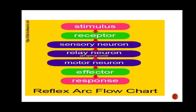After the stimulus, what happens? That stimulus moves towards your receptors. Receptors are your sense organs. We have five sense organs, and in those sense organs we have sensory neurons. Sensory neurons then connect to relay neurons.